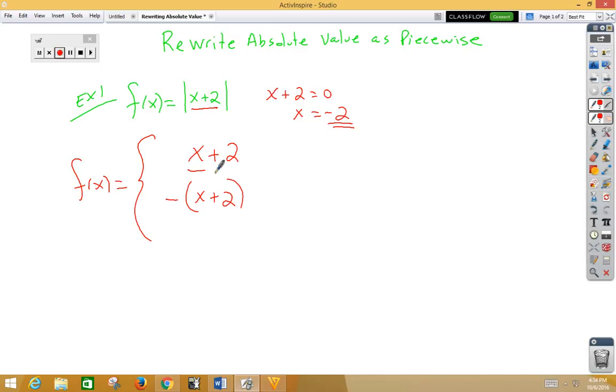My positive function is going to be x is greater than negative 2. My negative function is going to be less than or equal to negative 2. If you want to think of it as a graph, this is a V-shape that has been shifted left 2.